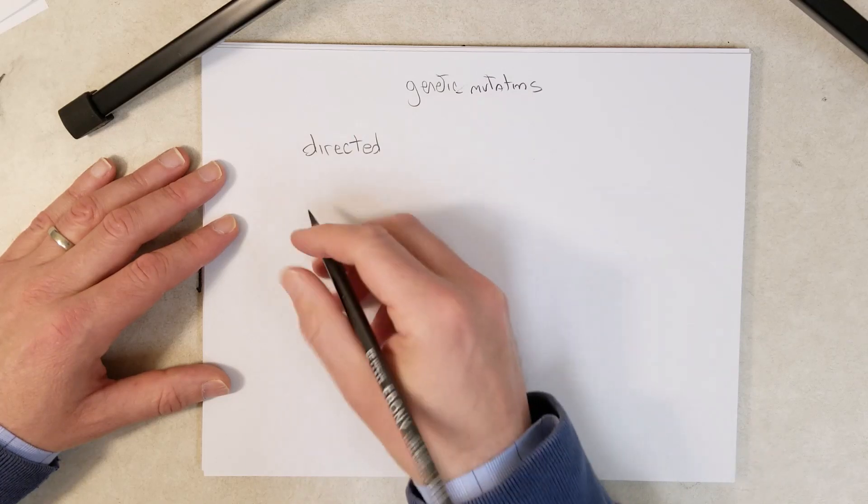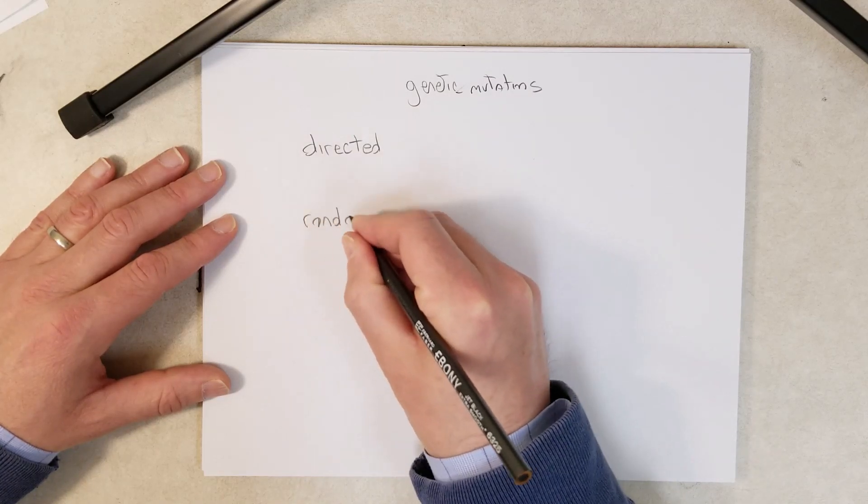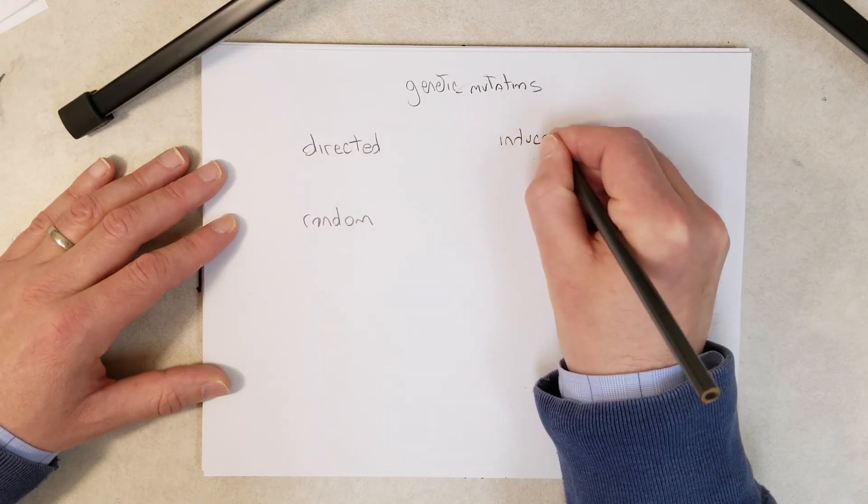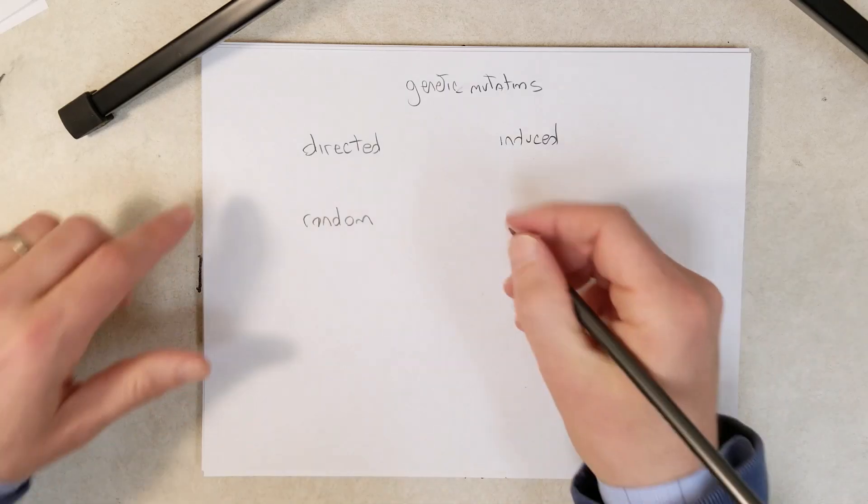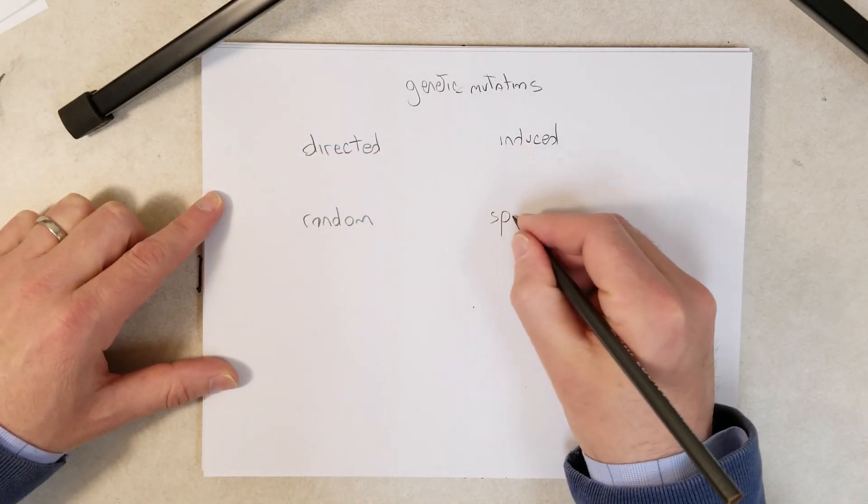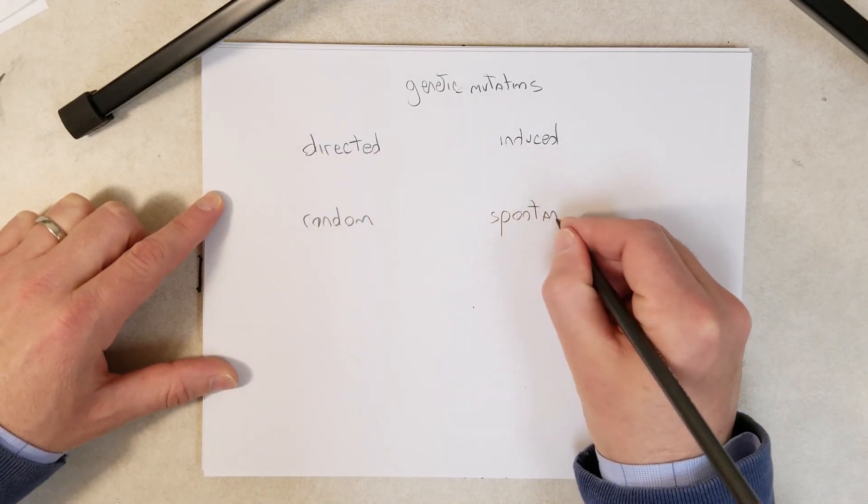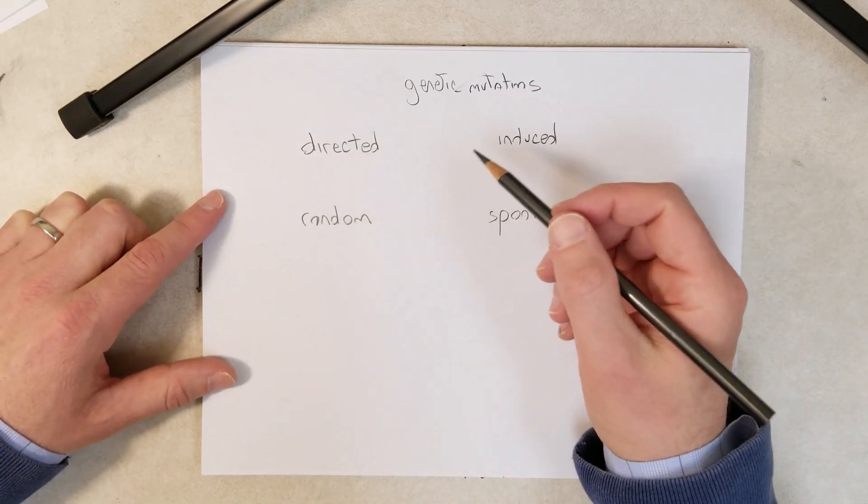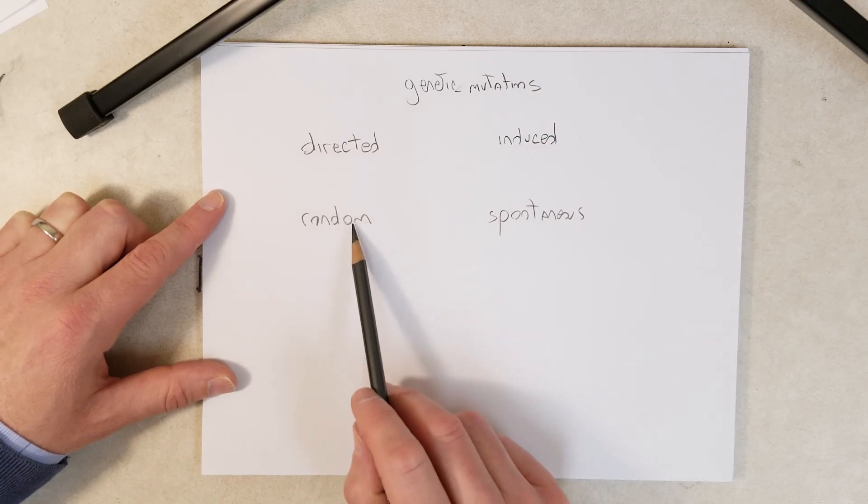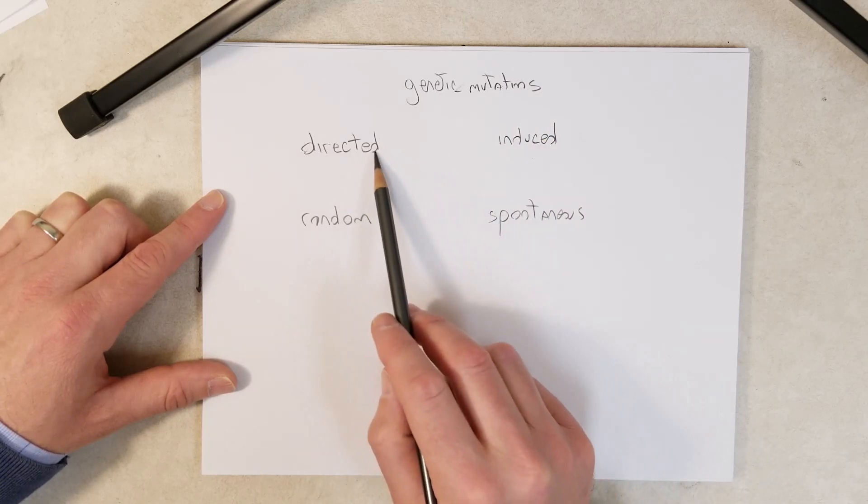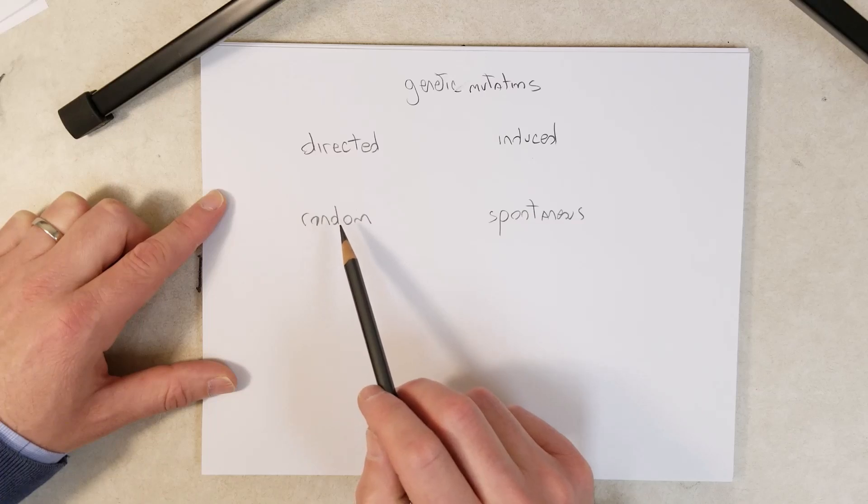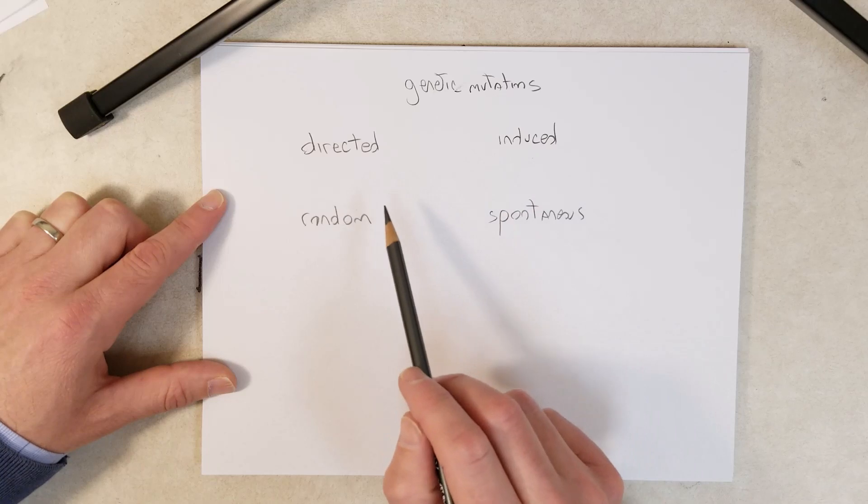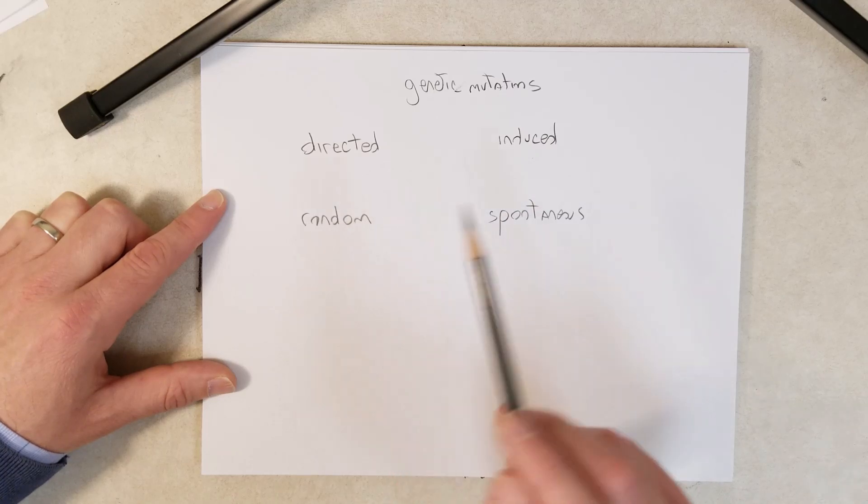We are going to cover four terms that are very similar and it's easy to confuse these: directed, random, induced, and spontaneous. I find these terms confusing but we use them in slightly different ways. Random and spontaneous seem very similar to me, as do directed and induced.